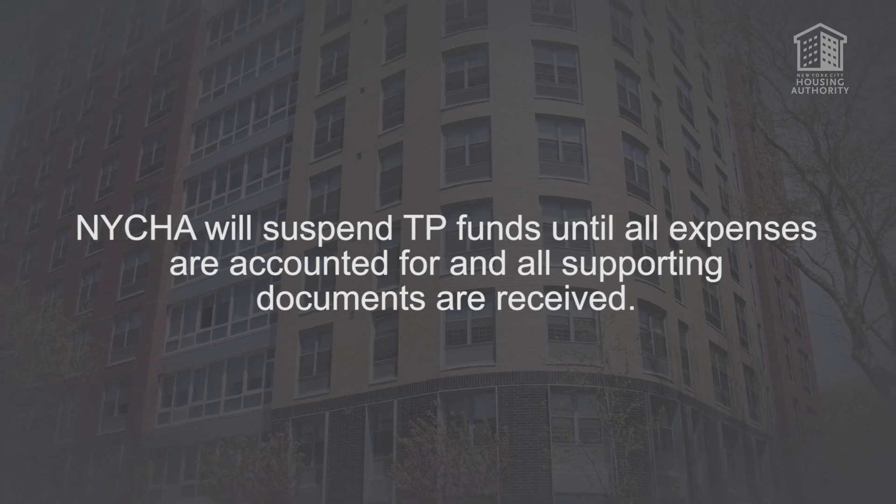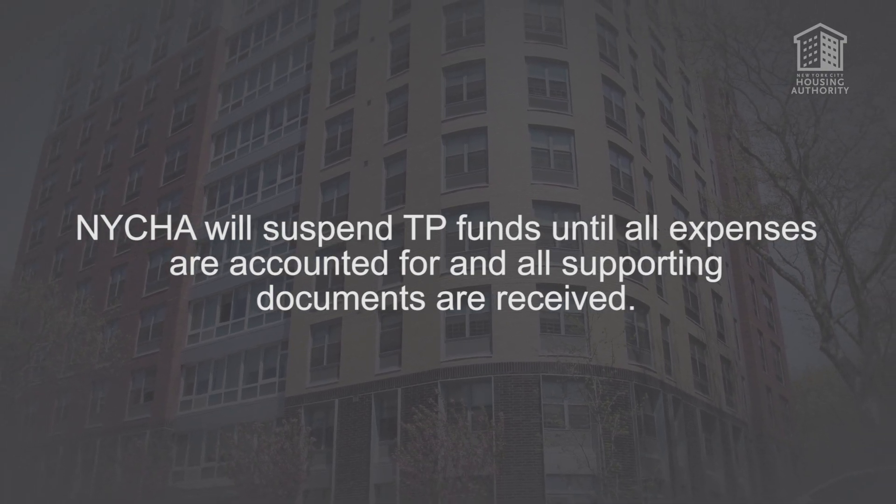Quarterly Reconciliations: No later than 6 weeks after the end of the quarter, the Resident Council must reconcile its expenses for the quarter and submit its reconciliation and all supporting documentation to its Resident Engagement Coordinator. The purpose of the reconciliation is to adjust the Resident Council's projected expenses — the cost estimates included in the spending plan — with the Resident Council's actual expenses. If the Resident Council fails to properly or timely submit a quarterly reconciliation, NYCHA will suspend TP funds until all expenses are accounted for and all supporting documents are received. In the event the Resident Council spends more than it is budgeted, it must adjust its spending plan by reducing the budget elsewhere.